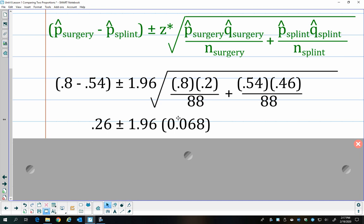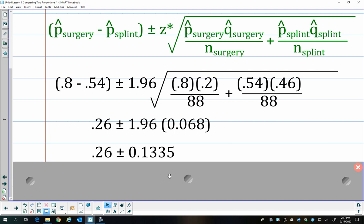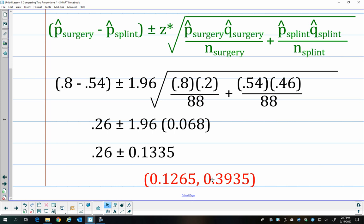And then we're going to simplify until we get to our final interval. So my standard deviation is 0.068, and I multiply that by 1.96. I get approximately 0.1335. Add and subtract that to our sample difference, 0.26, and we have an interval.